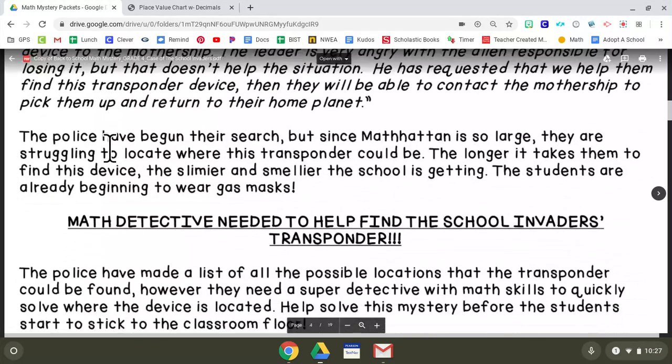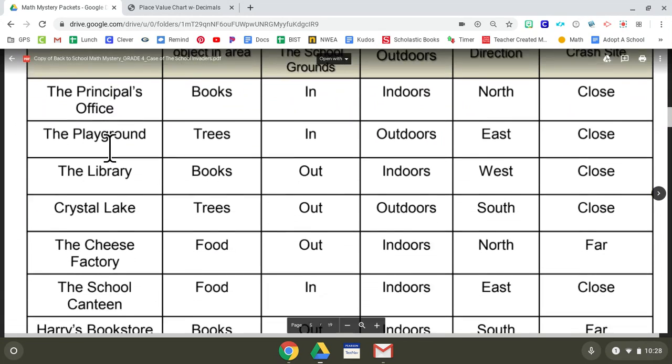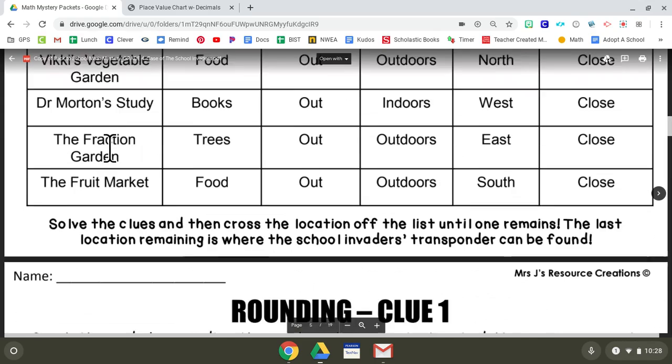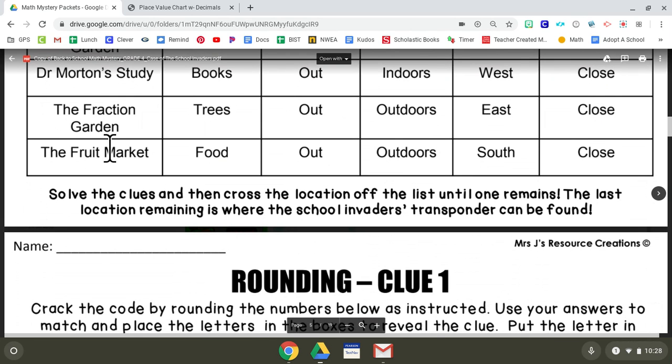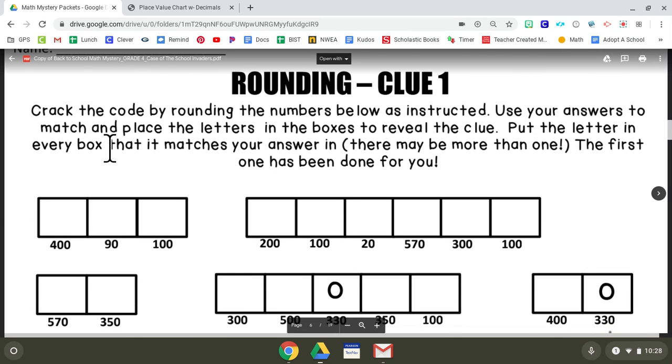Going along, this is just like last week—possible locations that they could have left it. You're going to go through and cross off each and every one of these to make sure that you know exactly where they left the transponder. Use all the clues and then cross the location off the list until one remains. The last location remaining is where the school invaders' transponder can be found. All right, this is Monday, Rounding Clue One.